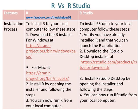To install RStudio to your local computer, follow these steps. First, verify you have already installed R and that you can launch the R application. Step 2, download the RStudio desktop installer at rstudio.com. Step 3, install RStudio desktop by opening the installer and following the steps. Step 4, you can now run RStudio from your local computer.